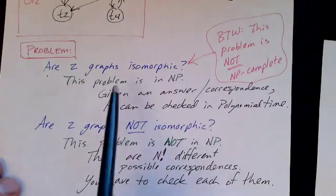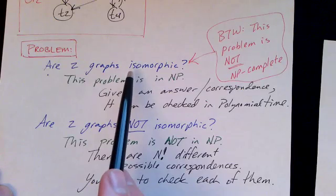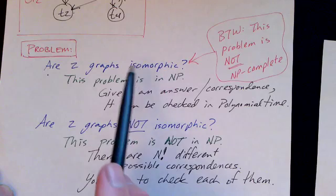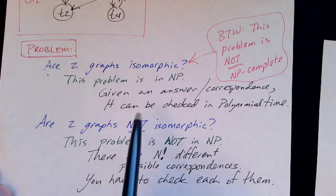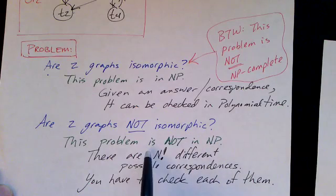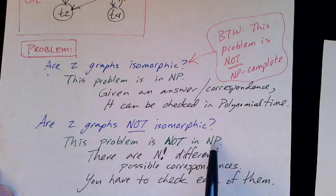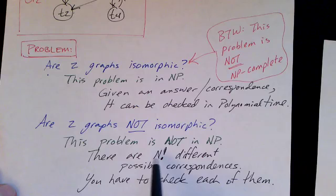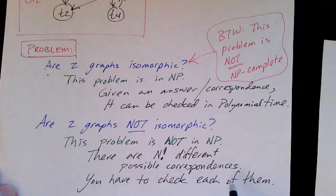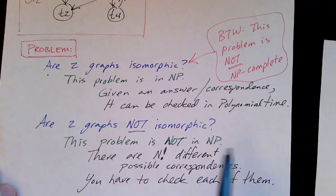Now there's another problem that's the opposite or complementary problem. Given two graphs, the question is not whether they're isomorphic but whether they're not isomorphic. Turns out this problem is not even in NP. There are n factorial different possible correspondences, and you just have to check each one of them. Non-determinism doesn't really help. You just really have to check everything. So you need exponential time to do it, even if you have a non-deterministic Turing machine. You can't do it in polynomial time on a non-deterministic Turing machine.